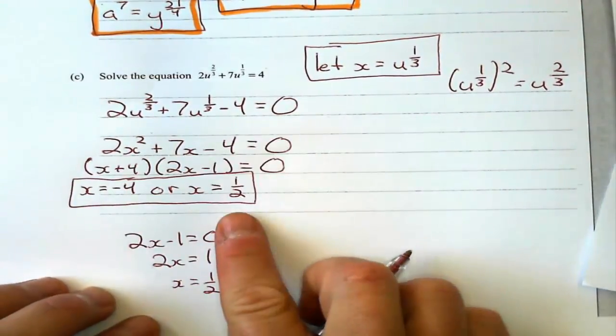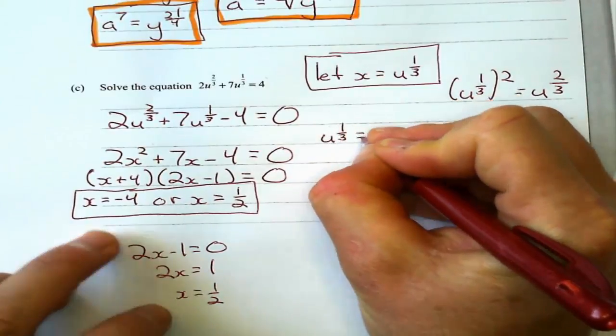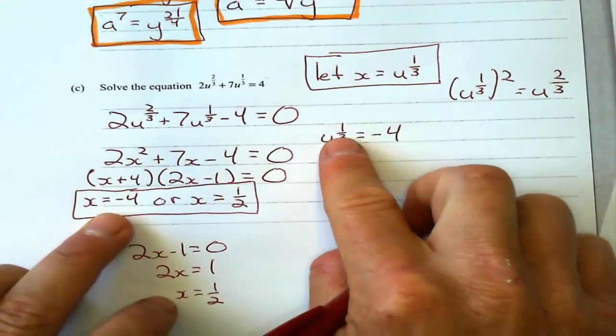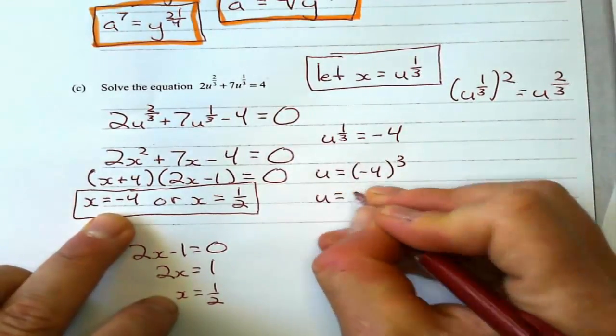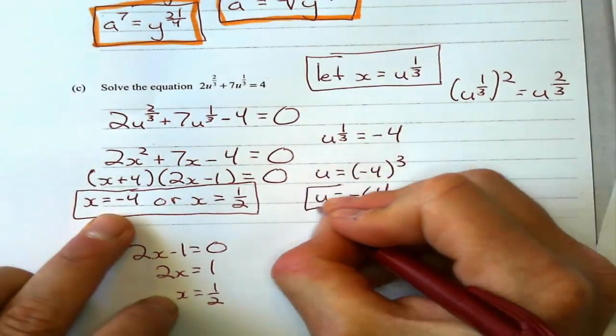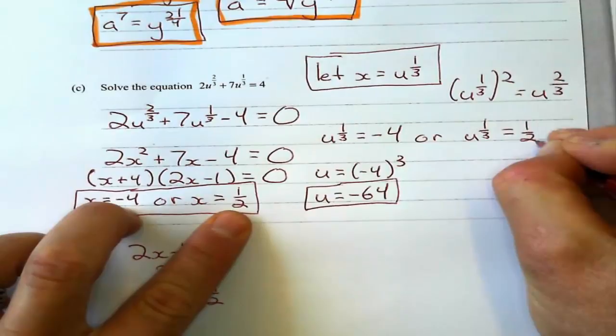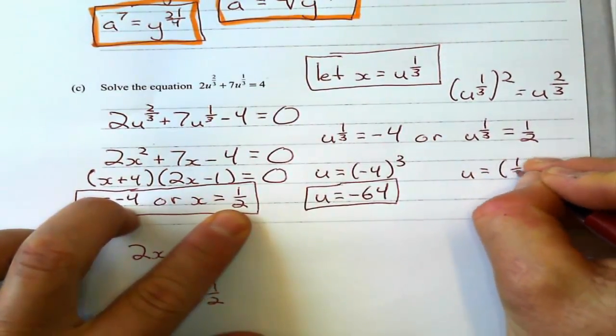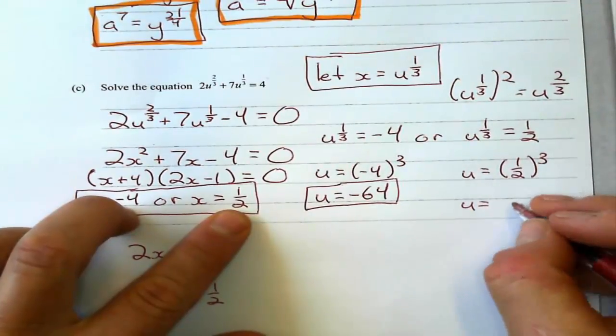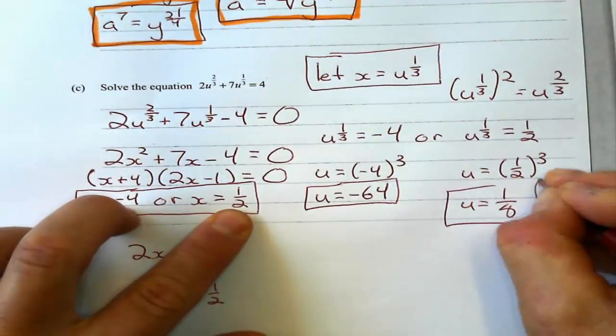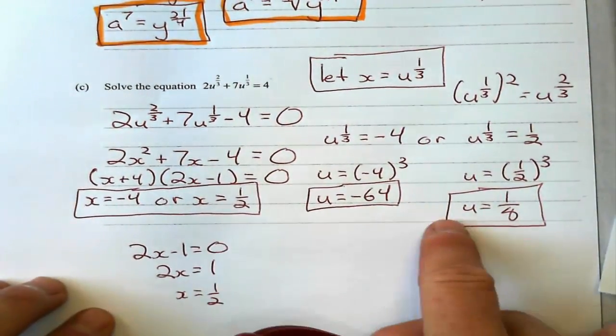That's great, but we don't want to find x, we want to find u. So if x equals u to the power of 1/3, that means u to the power of 1/3 can equal negative 4, which means I would have to cube that to solve for u. u equals negative 4 cubed, and negative 4 cubed is negative 64. u to the power of 1/3 can equal 1/2, in which case I'll cube it again. 1/2 cubed is the opposite of the power of 1/3. 1/2 cubed is 1/2 times 1/2 times 1/2, which is 1/8. So these are my final answers here because I'm solving for u.